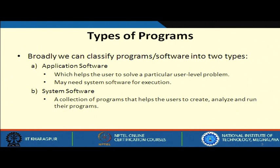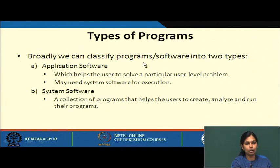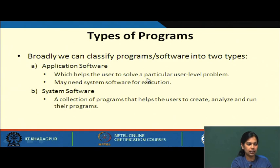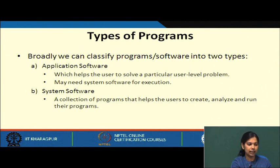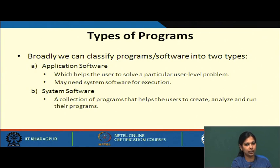What are the types of programs we have? Broadly, we can classify programs or software into two types. The first is application software, which helps the user solve a particular user-level problem and may require system software for execution. The second is system software, which is a collection of many programs that helps the user create, analyze, and run their programs.